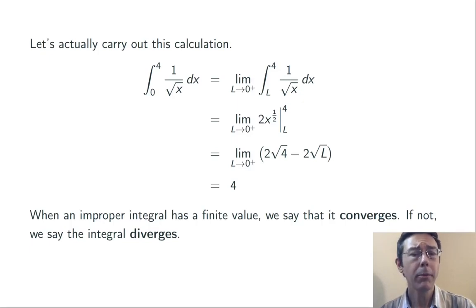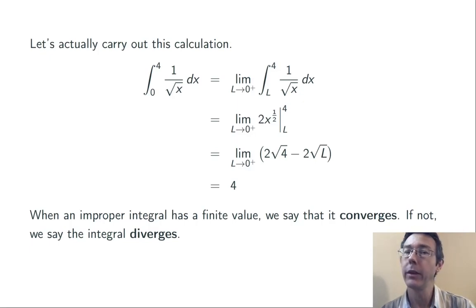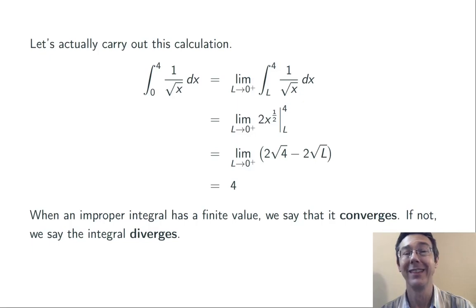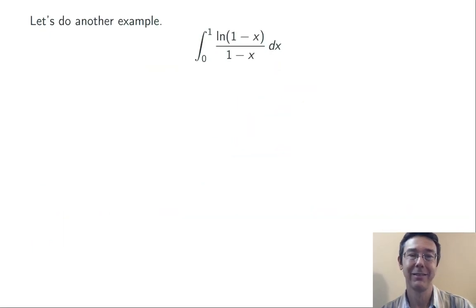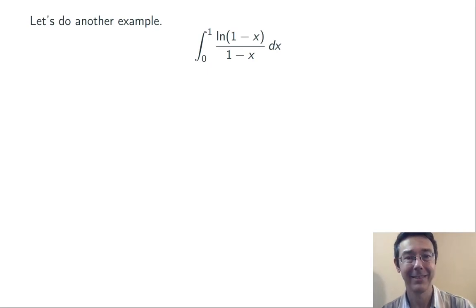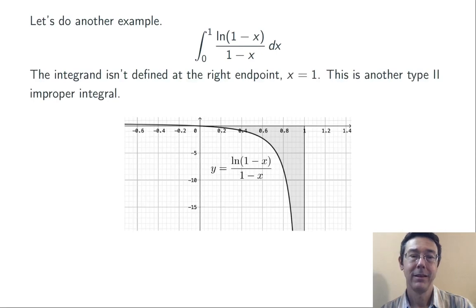When an improper integral ends up having a finite value, we say that the integral converges to that value. If it doesn't, we say the improper integral diverges. Let's do another example: the integral from 0 to 1 of the natural log of 1 minus x over 1 minus x dx. This is also an improper integral.